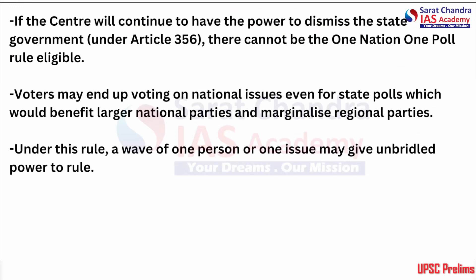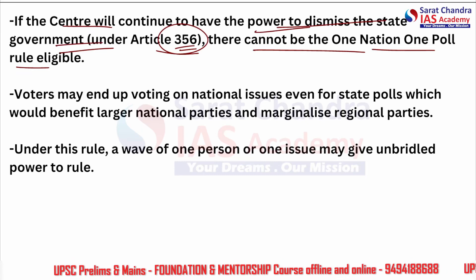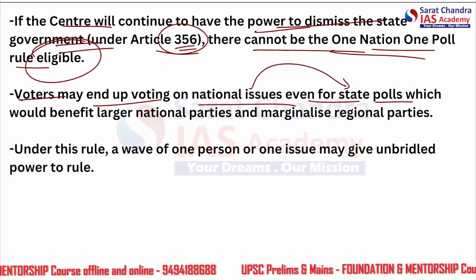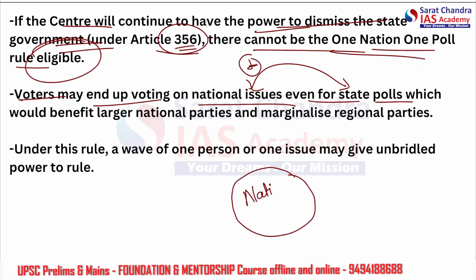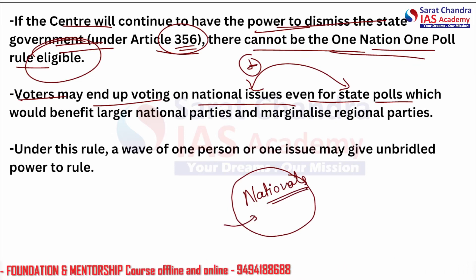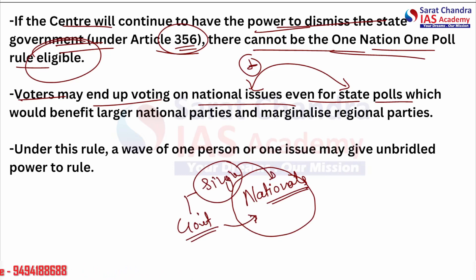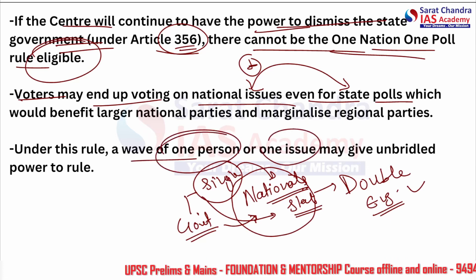Another concern: if the center continues to have the power to dismiss state governments under Article 356, then one nation one poll cannot be made eligible. Fourth, voters may end up voting on national issues even for state polls — this may favor a single party. Under this rule, a wave of one person or one issue may give unbridled power to rule.